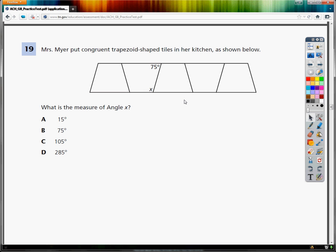Congruent being that they're the same. What is the measure of angle X? Now there's a couple ways that you can look at this. First off, you could know something about isosceles trapezoids and know that if this bottom angle is 75, then this is 75.